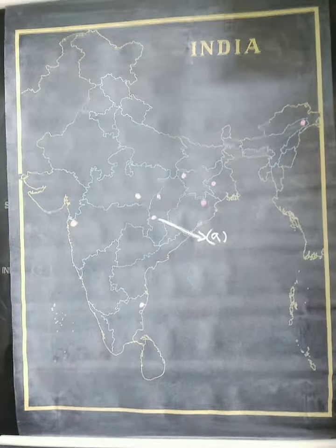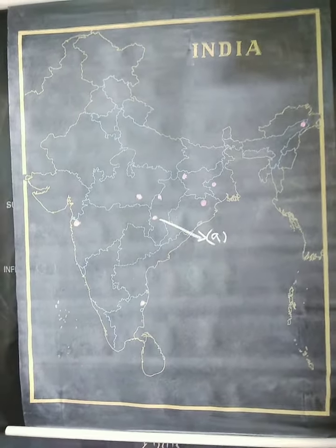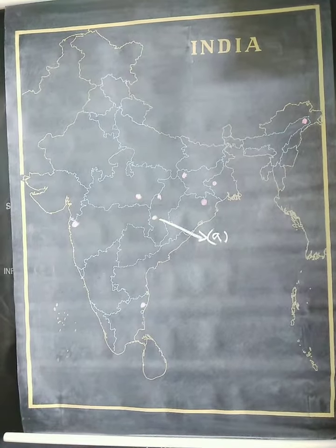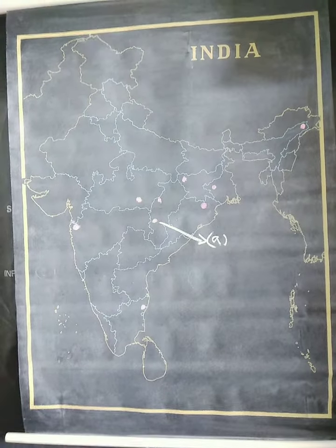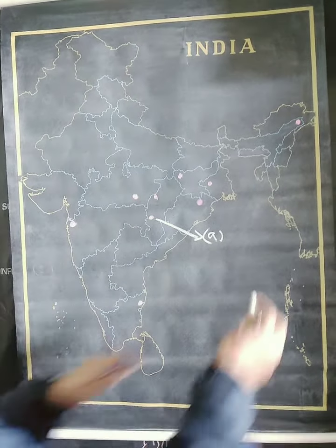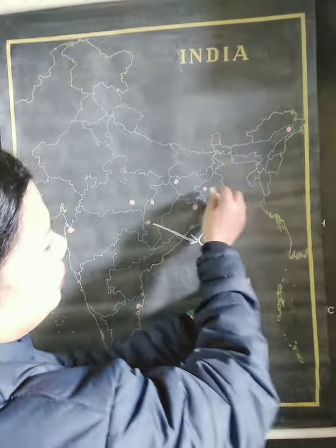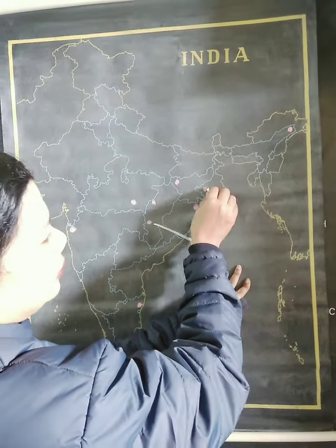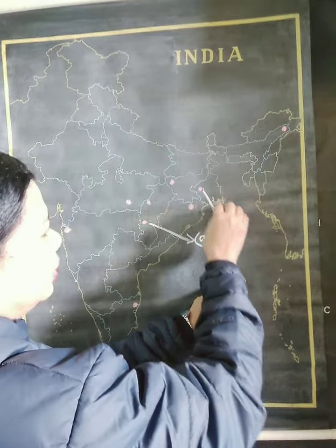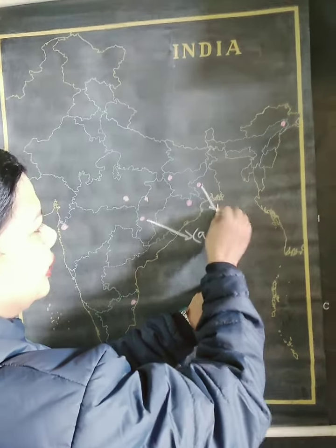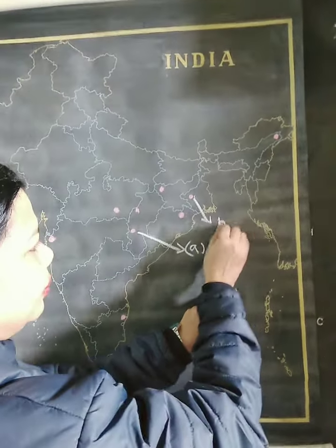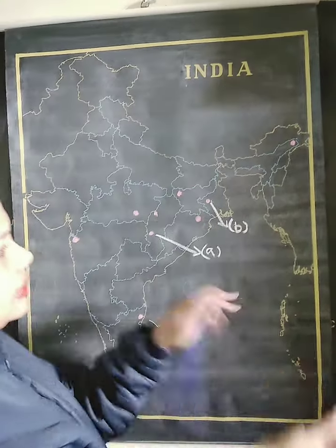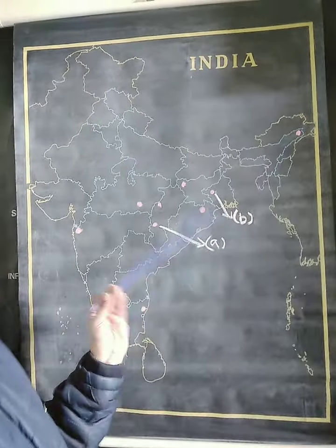Answer number B: the second answer was West Bengal, Rariganj. In the center of West Bengal, Rariganj is there. This is answer number B.